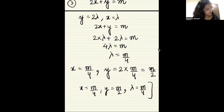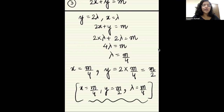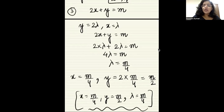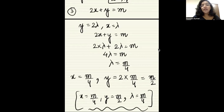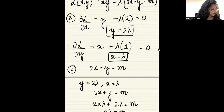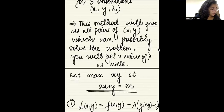So the solution is x = m/4 and y = m/2. These are the possible values that solve this problem, obtained using the Lagrange multiplier method.